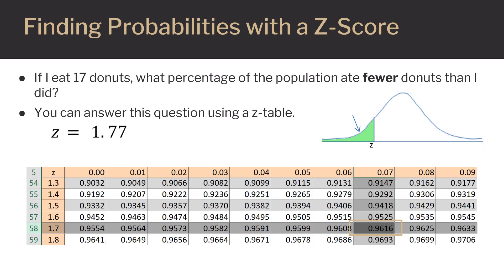If I eat 17 donuts, what percentage of the population ate fewer donuts than I did? You can answer this question using a Z-table. We had already calculated Z equaled 1.77.